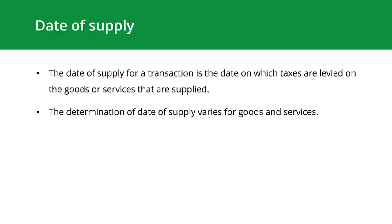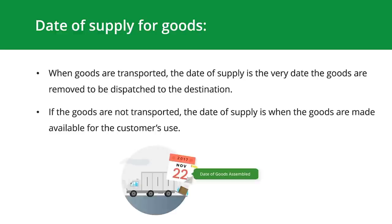The last component of supply is the date of supply, also called the time of supply — the date on which taxes are levied on the goods or services supplied. For goods: when goods are transported, the date of supply is the date the goods are removed to be dispatched. If goods are not transported, the date of supply is when the goods are made available for the customer's use. For goods delivered in installments that must be assembled, the date of supply is when the goods are assembled or installed. For quarterly filing, if a delivery note is sent in March and goods go out in April, the transaction is still considered part of the first quarter.